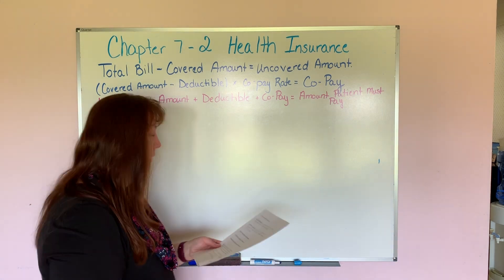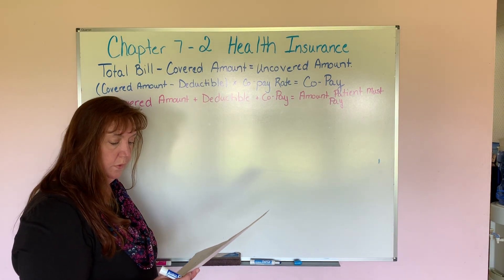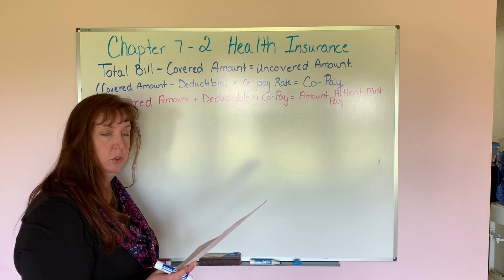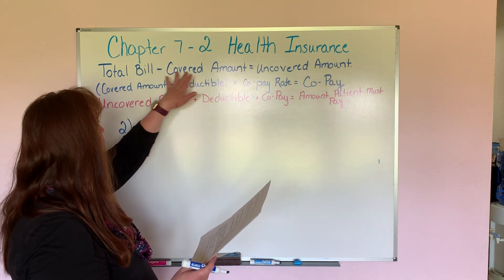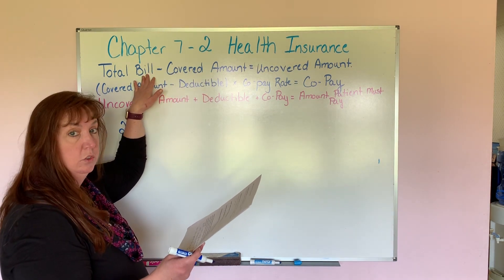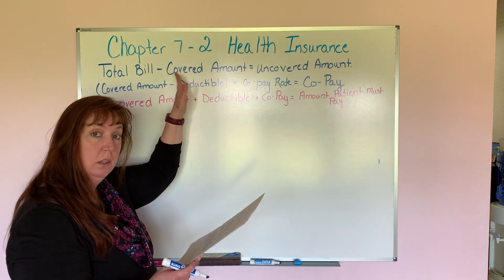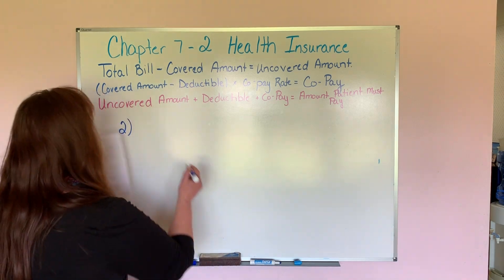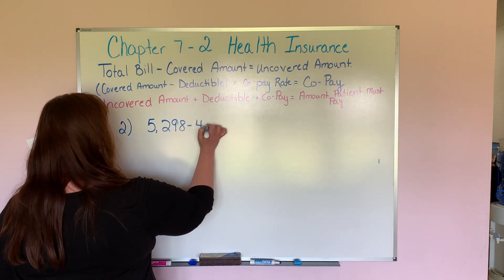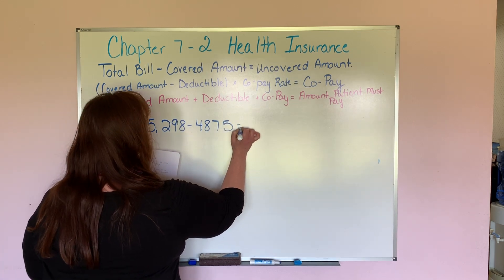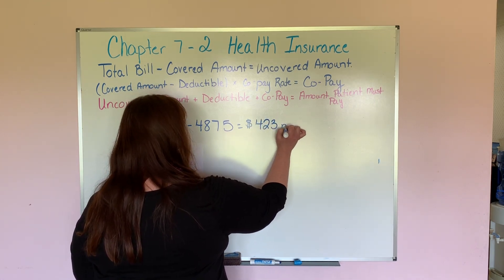Example two: Jolene underwent surgery for an injury. The hospital's portion of the bill was $5,298, of which only $4,875 was covered. So the total bill was $5,298 and the covered amount is $4,875. The uncovered amount is $5,298 minus $4,875, which equals $423. This $423 is not covered, meaning Jolene needs to pay this — that's the first amount she must pay.